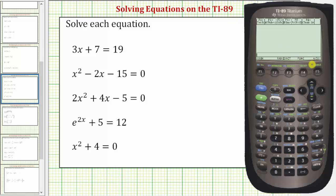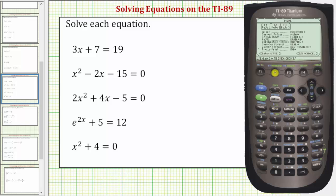I do have the calculator set to exact mode. If we press the mode key and then F2 for page two, notice how down here it does say exact. If we arrow down to the exact and press the right arrow, remember there are three options: automatic, exact, and approximate.